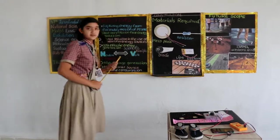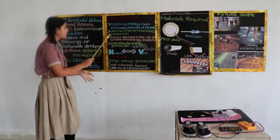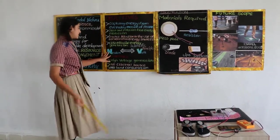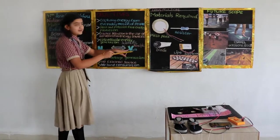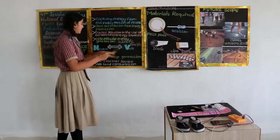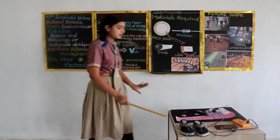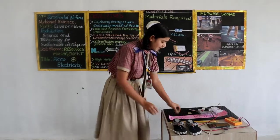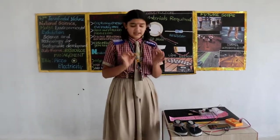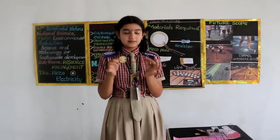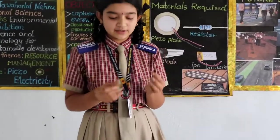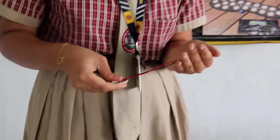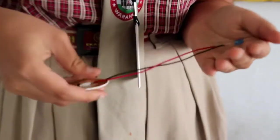The main scientific principle behind our project is: when we walk, force is exerted, and this force is converted into voltage — meaning Newton to volt. See here, this is the piezo plate, and I have connected my LED to it. When I am exerting some pressure on it, this bulb glows.